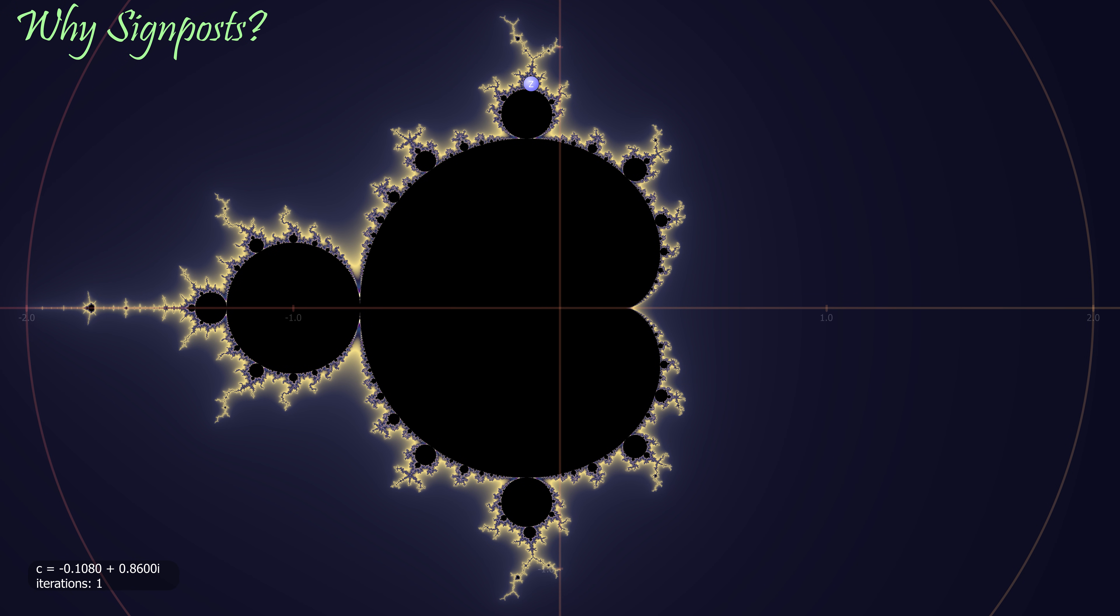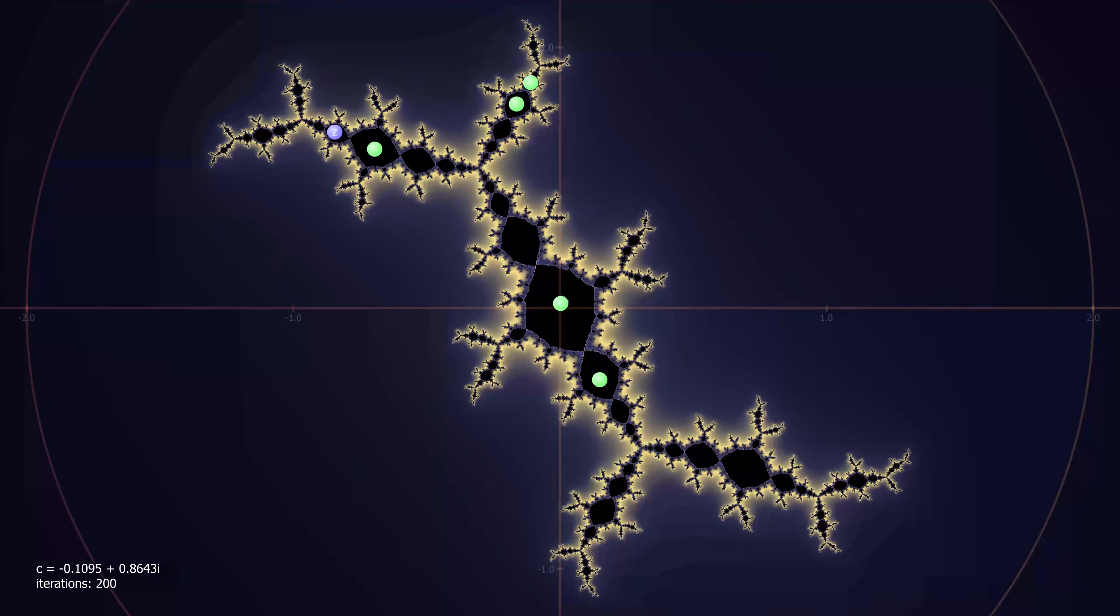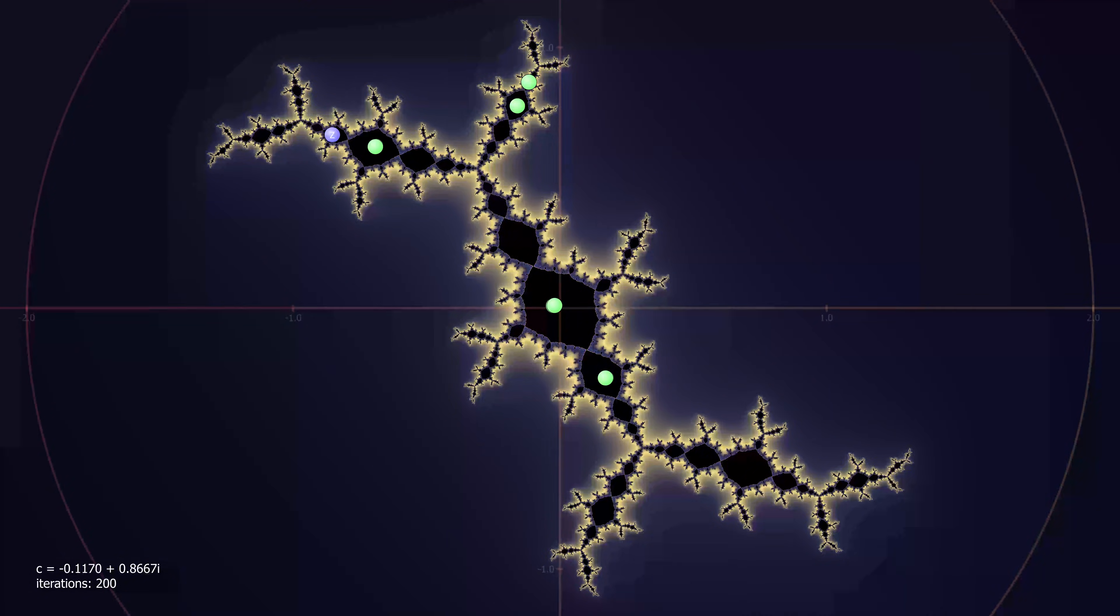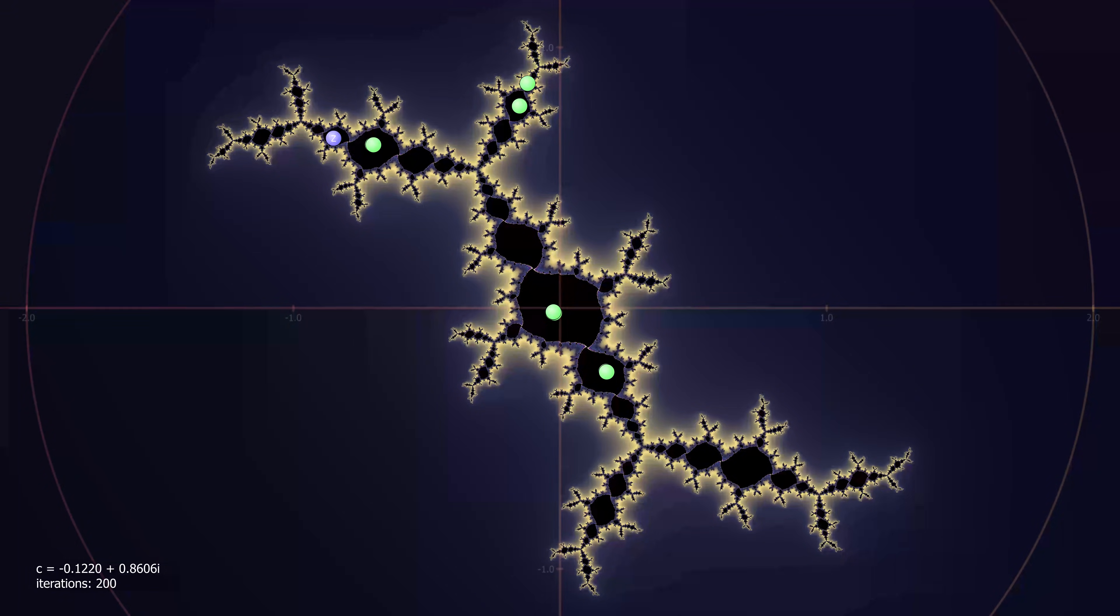You may be interested into why these signposts exist. Going back to the period 3 bulb again, remember that the signpost has 3 way branching. Beyond the main bulb there is another bulb. This sub bulb has a period of 6. If you have a look at the Julia set, you can see that the orbits are bunched into 3 groups of 2. The Julia set still has 3 branches.